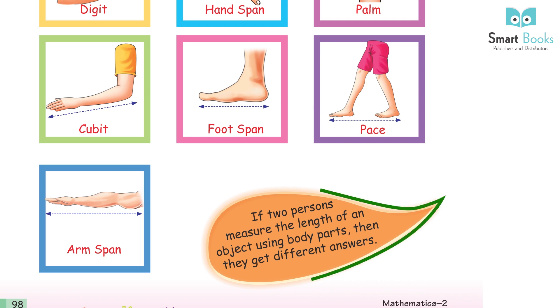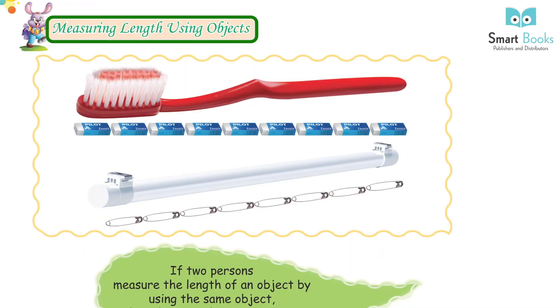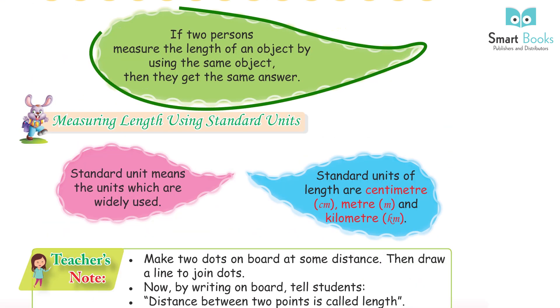The bucket holds less water than the tub. The tub holds more water than the bucket. Let's revise Length. Measuring length using body parts: Digit, Handspan, Palm, Cubit, Footspan, Pace, Armspan. If two persons measure the length of an object using body parts, they get different answers.